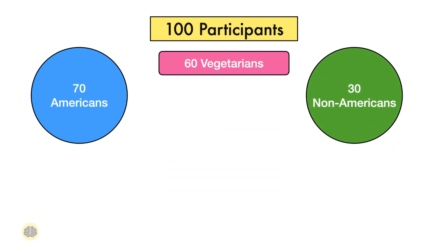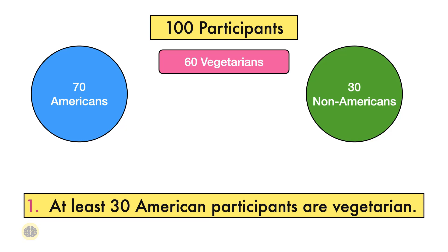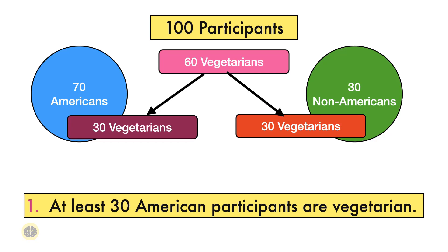According to the question, there are 100 participants and out of 100, 70 are Americans, so non-Americans will be 30. Let's analyze the first statement: at least 30 American participants are vegetarian. To check this, let's try to minimize the number of American vegetarians. For that, we have to maximize the number of non-American vegetarians. Out of 30 non-Americans, at max, all can be vegetarian. Still 30 vegetarians remain, which will fall under the American category, because there are total 60 participants who are vegetarians. So at least 30 Americans will be vegetarians, making the first statement correct.